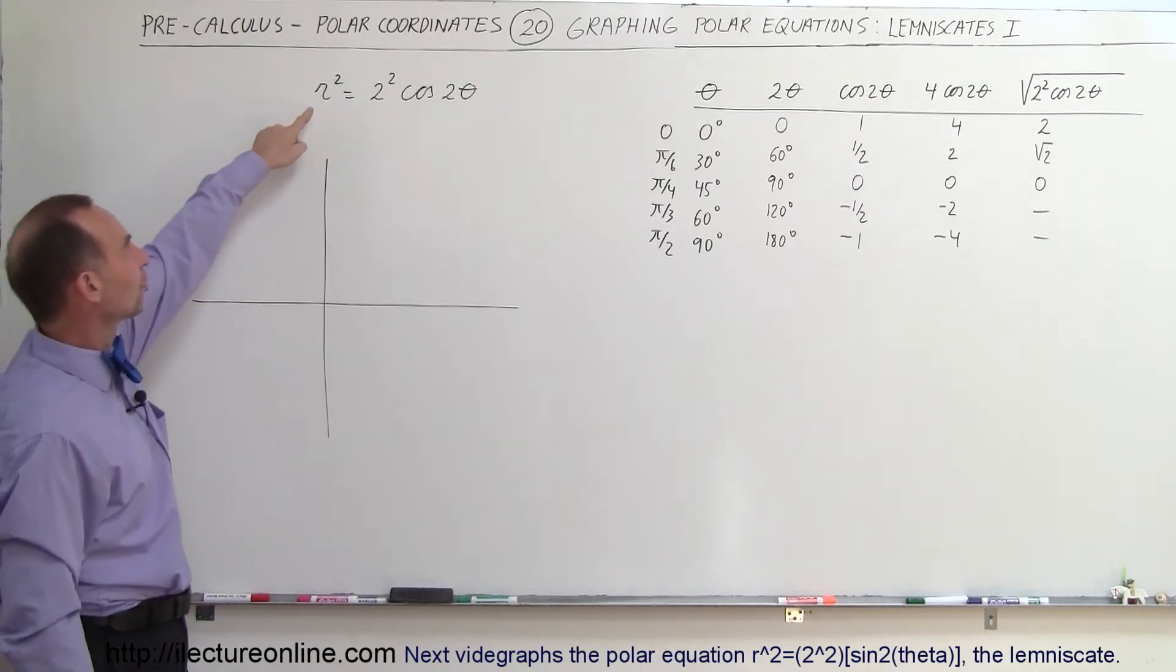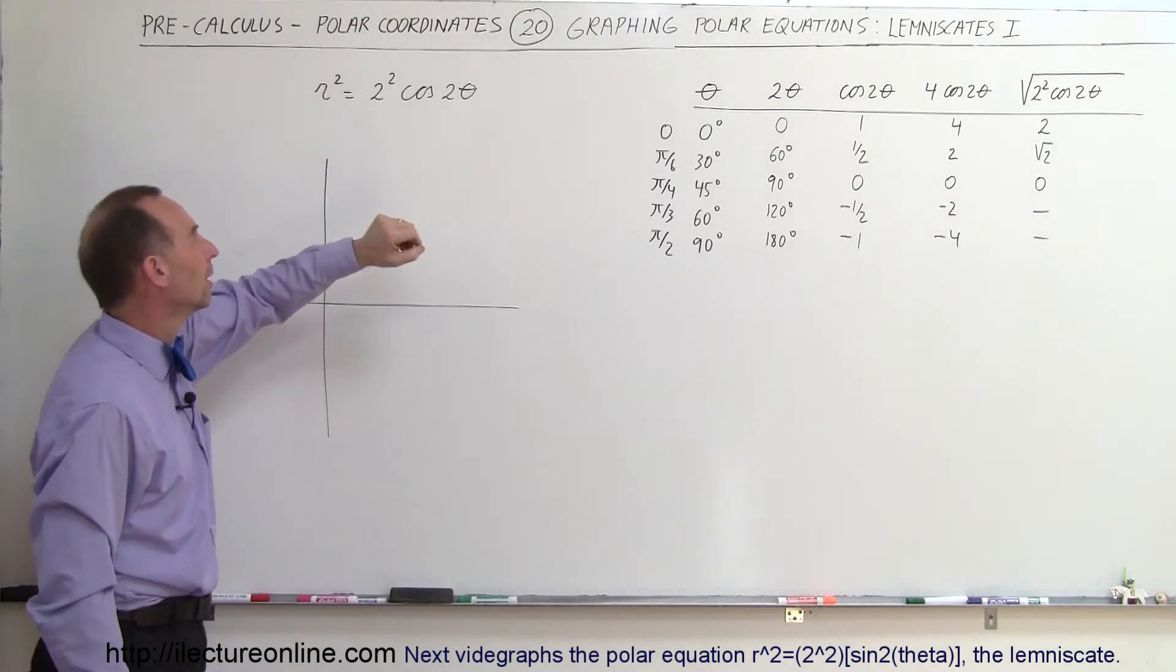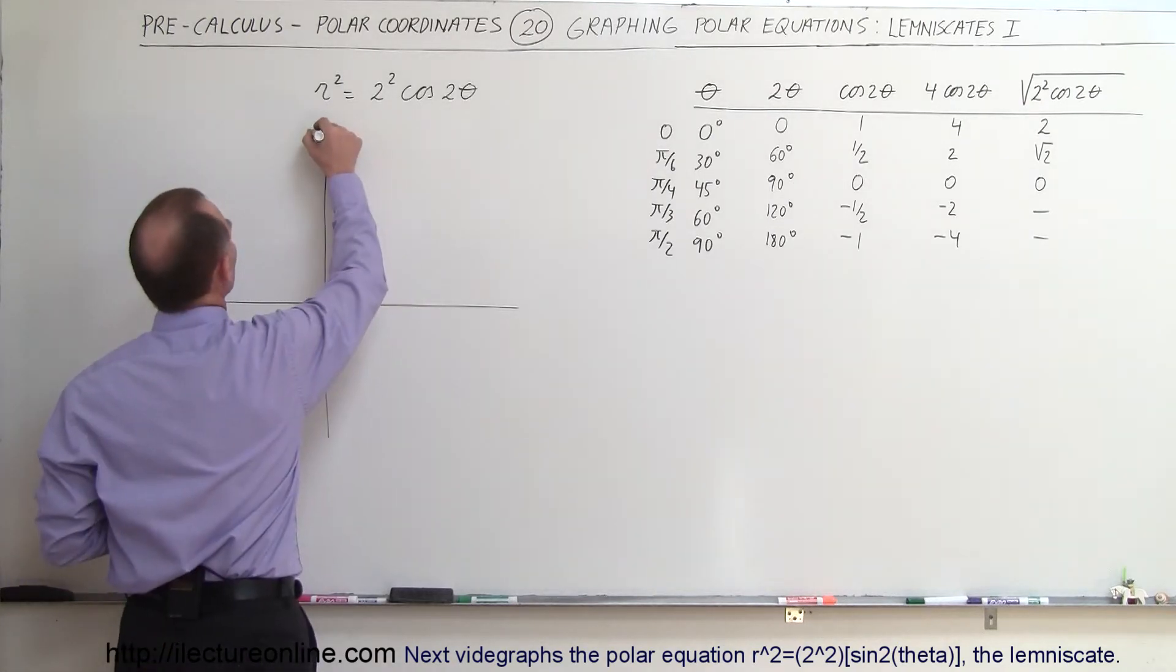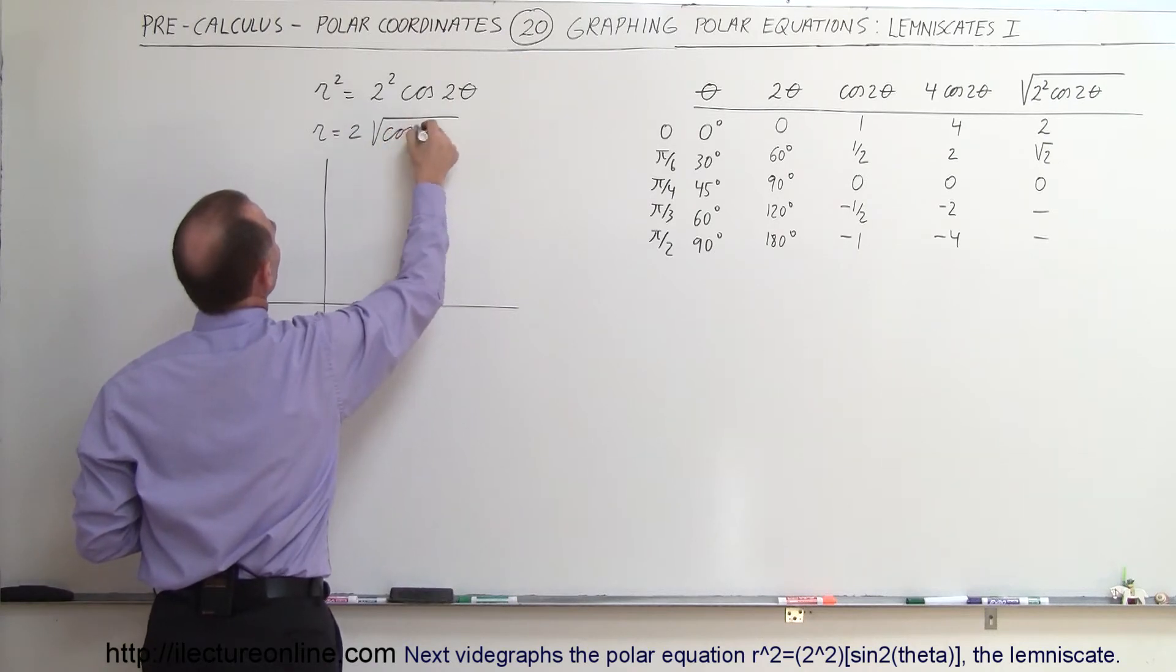Notice that here we have the equation in terms of r squared equals 2 squared times the cosine of 2 theta. Now if we rewrite this as the square root of both sides, we can then say that r is equal to 2 times square root of the cosine of 2 theta.